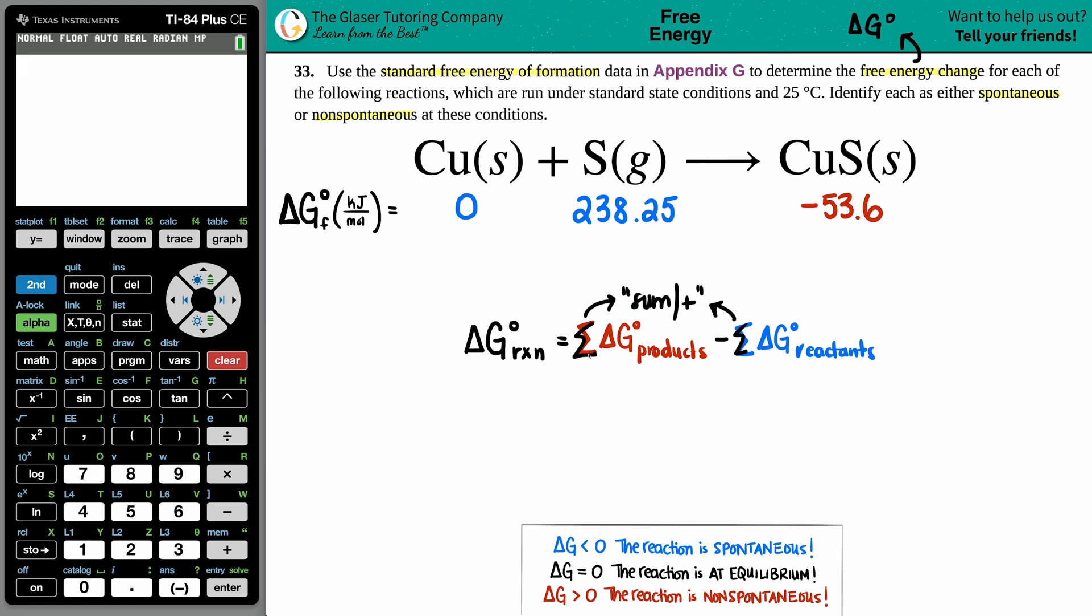But are these numbers going to stay the same or be different? Well, it goes by the balanced equation and the coefficients in front. In this case, I have nothing in front of the copper, nothing in front of the sulfur, and nothing in front of the copper sulfide. That means I have one of each. So technically for each value, you should be multiplying by that number. So I'm just going to show you: this would be one times zero, this would be 238.25 times one, and this would be negative 53.6 times one. So now you know what to do if you have like a two in front of the compound—you just take that number and times it by two.